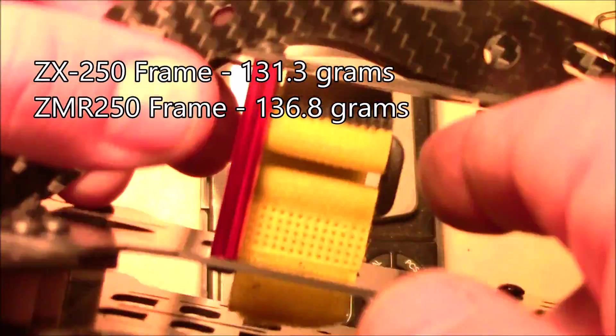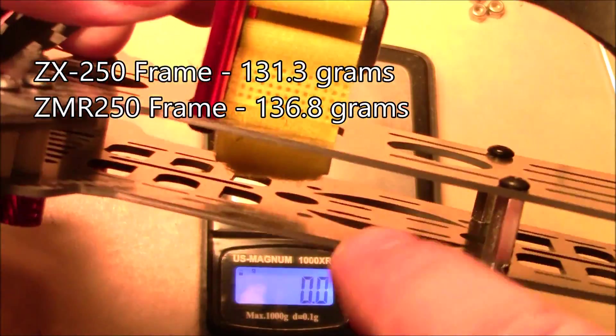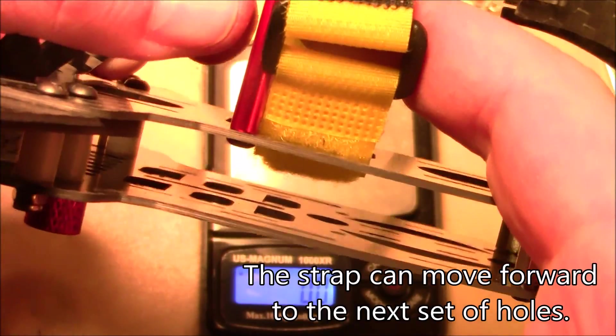I wanted to also point out that this battery strap looks like it might touch the Naze32 board, but when you pull it up tight, it should have plenty of room for a board in there.